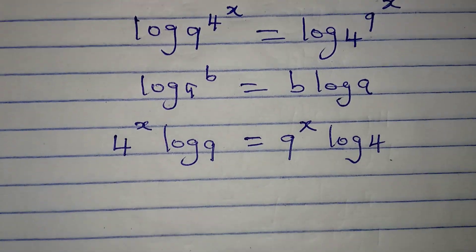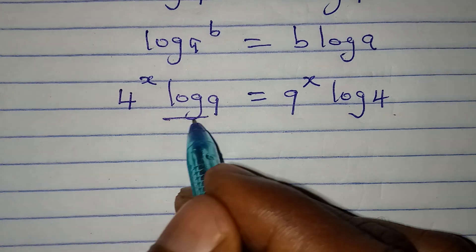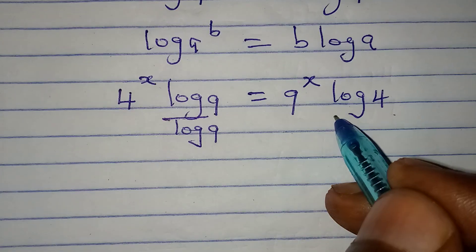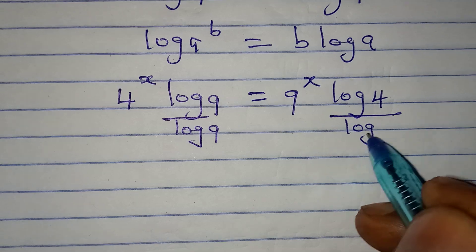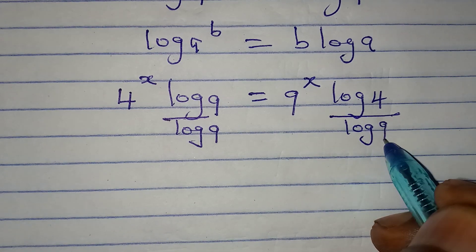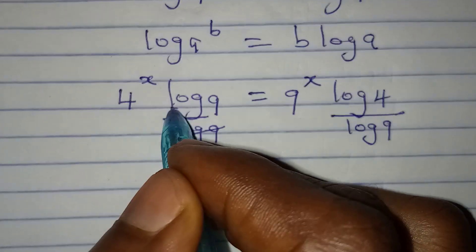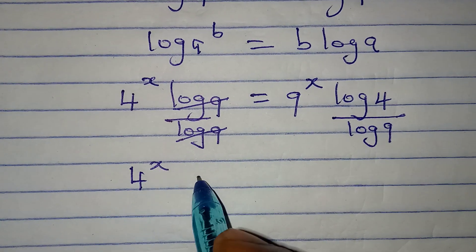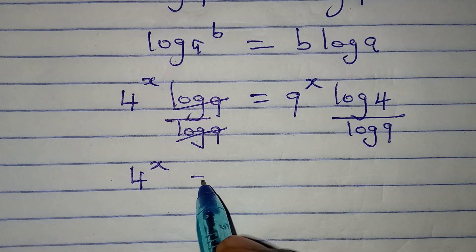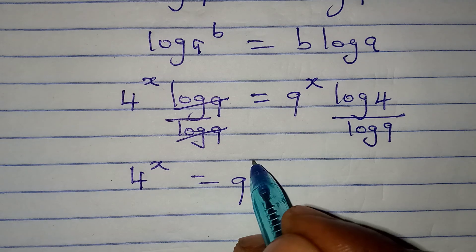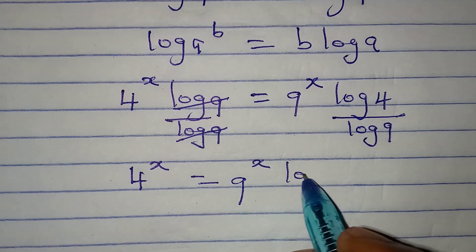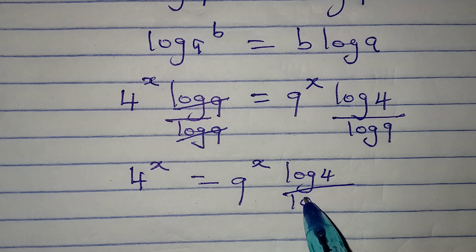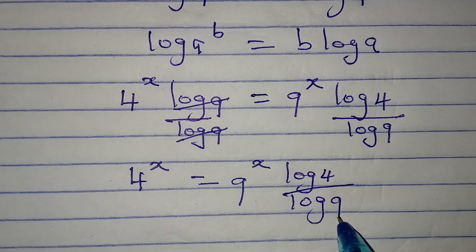Now the next thing I will do is divide both sides by log 9. Dividing by log 9 — this cancels that. Now we have 4 to the power of x equal to 9 to the power of x times log 4, divided by log 9.